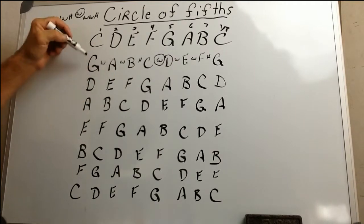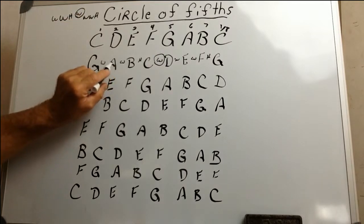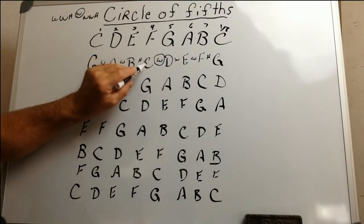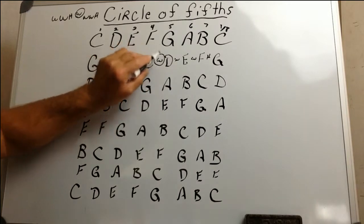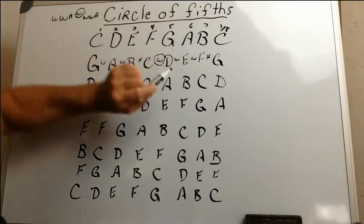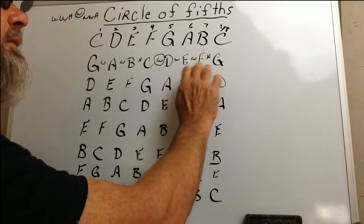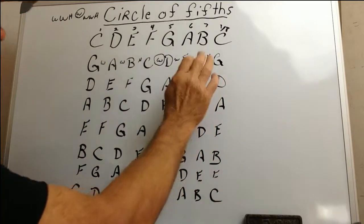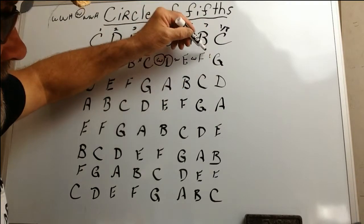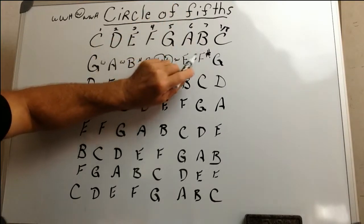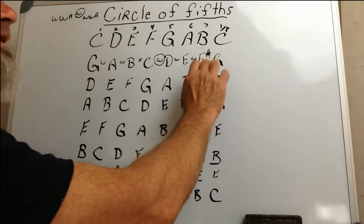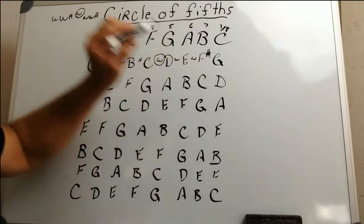G to A — is that a whole step? Yes, because we've got G, G sharp, A — two half steps. A to B — is that a whole step? Yes: A, A sharp, B. B to C — is that a half step? Yes, B goes directly to C. C to D — whole step? Yes: C, C sharp, D. D to E — whole step? Yes: D, D sharp, E. Is there a whole step from E to F? No, because E to F is a half step — there is no E sharp. So we go to F sharp, making it a whole step from E to F sharp. And then F sharp to G is a half step — that complies.